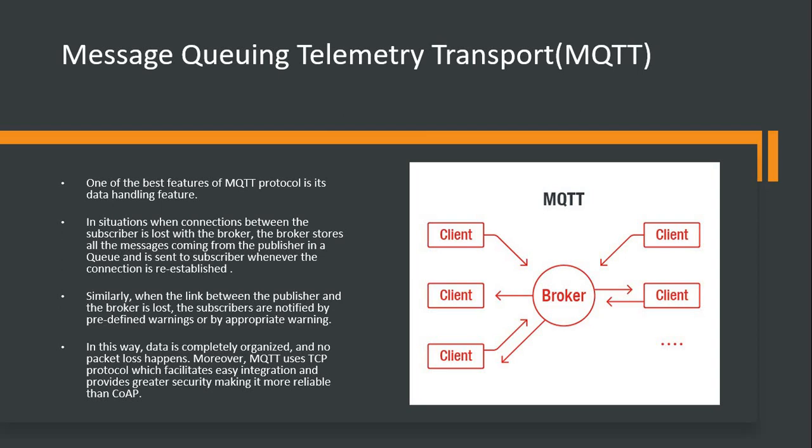Consider the situation where the subscriber loses connection with the broker. What the broker does is store all messages from the publisher in a queue and send them to the subscriber whenever the subscriber becomes available again. Whenever the connection is re-established, data is sent from the broker to the subscriber, so the data is not lost. When the link between the publisher and the broker is lost, subscribers are notified by predefined appropriate warnings, and the data is completely organized — packet loss, even if it happens, is properly notified.